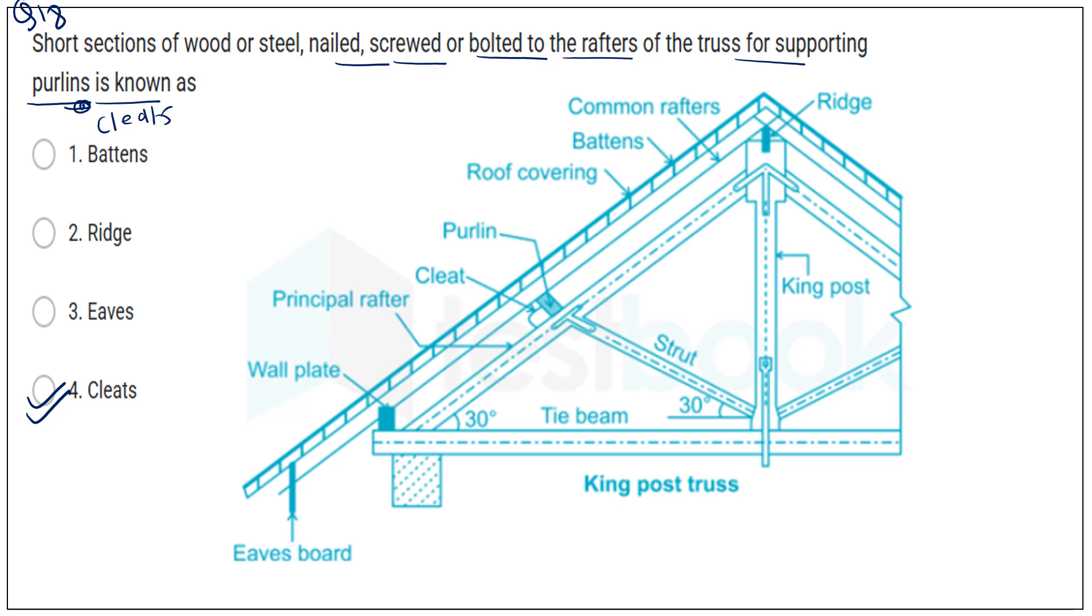So we will discuss about the remaining options. So batten, batten here in this diagram, here is a batten. So batten is used to fix the tiles. Batten form a one kind of a structure, which is used to fix the tiles or the wooden structure or any kind of tiles to fit into the sloping surface. Batten we use. The next is ridge. Ridge is the topmost part of this sloping surface. The next is eaves. So eaves is the bottom most part of the truss, which is used to cover the rainwater.